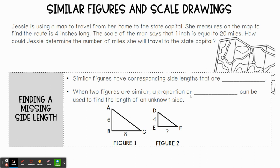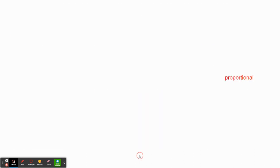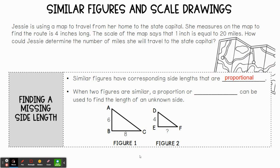Similar figures have corresponding side lengths that are proportional — we talked about this in the last lesson with ratios. So this is the same idea today; we're looking for a proportional rate. When two figures are similar, a proportion or scale factor can be used to find the length of an unknown side.